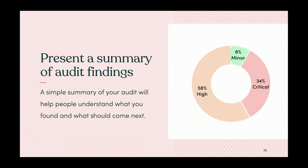All that work we did for theming, categorization, and impact directly funnels into our presentation of audit findings. We can show people the data — everybody's very data-oriented. We can say 'in our audit, we found 58% of the issues were high impact and need to be addressed ASAP, 34% were critical, and 8% were minor.' That helps people understand what's happening at a high level.